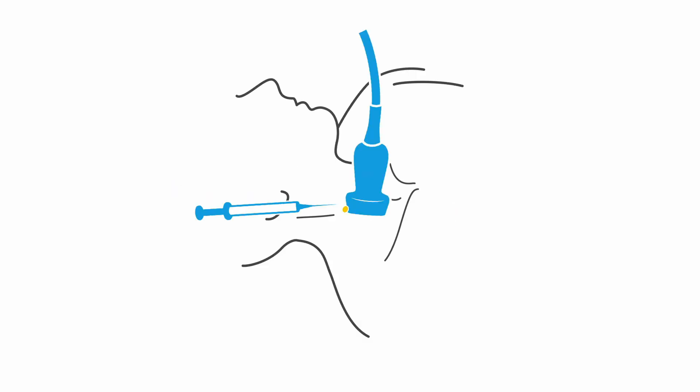Here is general probe placement for longitudinal or sagittal axis. The vessels here will appear as tubes. The probe should be perpendicular to the skin and the indicator towards the head.